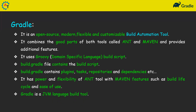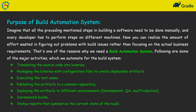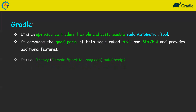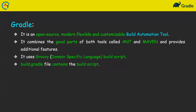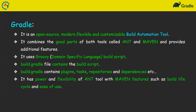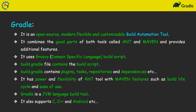So that is all about Gradle. We discussed what a build automation tool is, its purpose, and what Gradle is. Gradle is an open source, modern, and flexible build automation tool with the power of Ant and Maven. You write the build code using Groovy in the build.gradle file, which contains plugins, tasks, repositories, and dependencies. Gradle is primarily used for JVM languages and also supports C, C++, and Android application development.